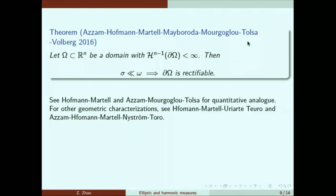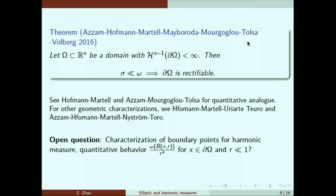In some sense, this gives you a necessary geometric assumption. But there are many open questions that remain. For example, it would be nice to characterize the boundary points from the point of view of harmonic measure. For different types of boundary points, how big is the harmonic measure on that point with size r?